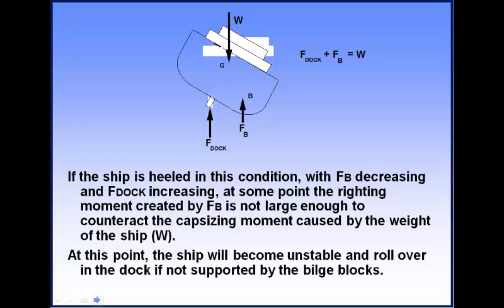If a ship is in an unstable condition it's going to capsize — unable to right itself. We need to make sure it doesn't become unstable and start to roll, because we need the vessel at an even keel to do maintenance items, and it's simply not safe to have the vessel heeled over while in a dry dock.